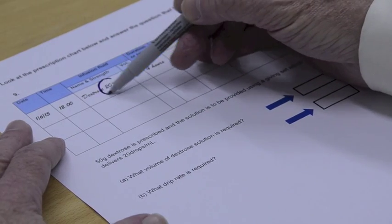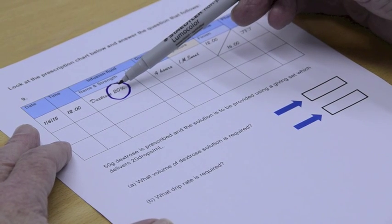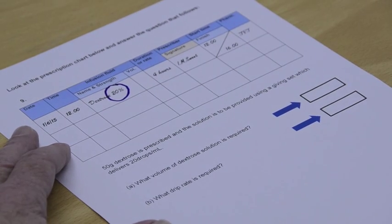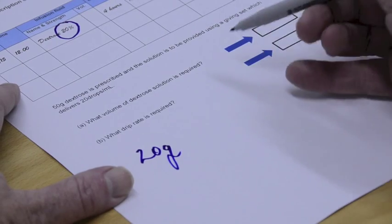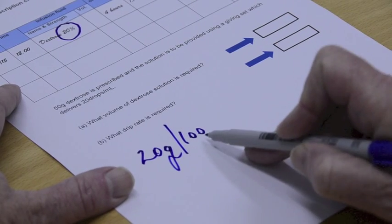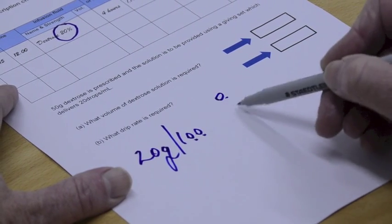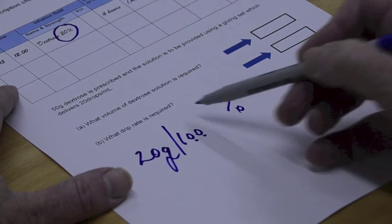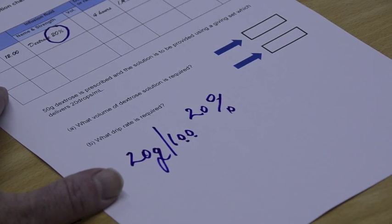This is dextrose 20% and that really means that there are 20 grams of dextrose in every 100 mils of the solution. So what I mean by that I'll just write it out. It's 20 grams per 100 mils. But 100 is per 100 or percent. It's the same thing. That's what the percentage sign means. So that's why we've got a 20% solution. But we can use this in our calculation to find out exactly what we've got.